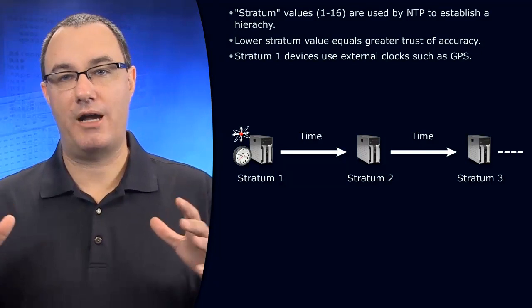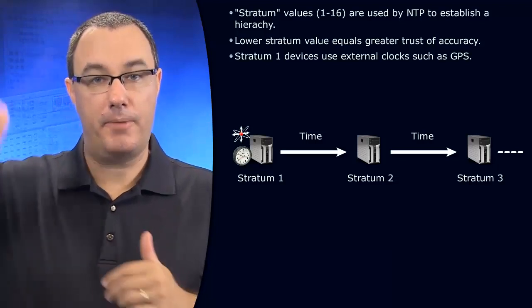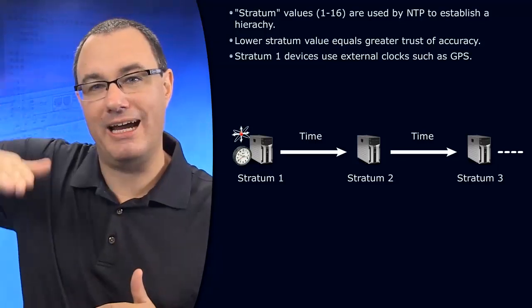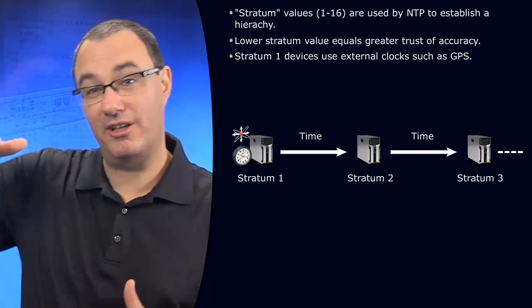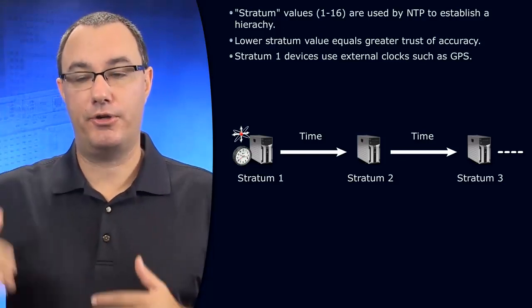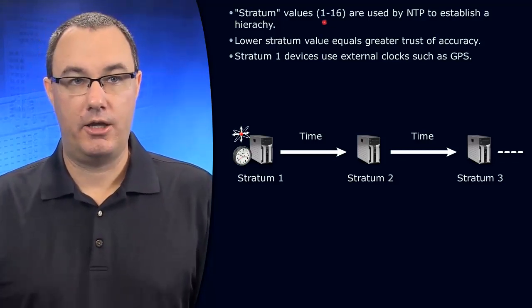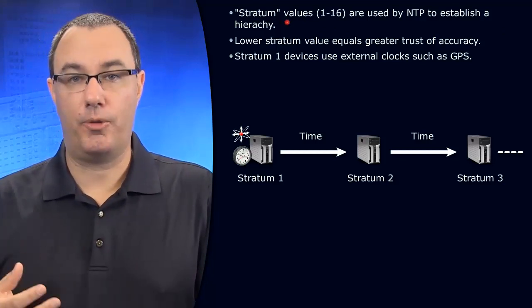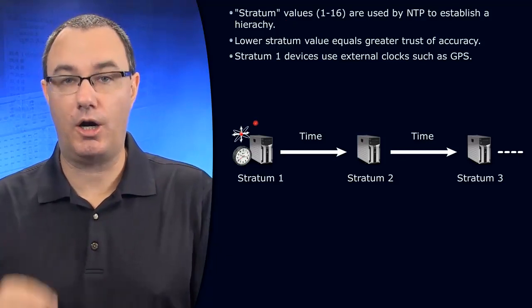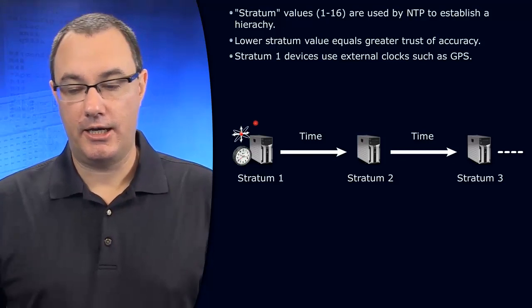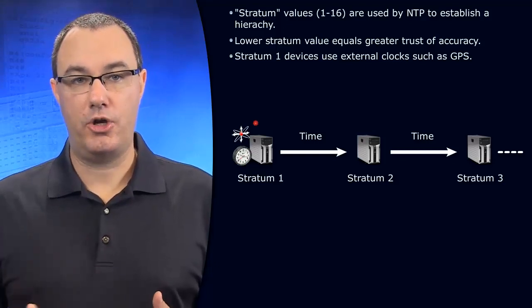Have you ever been driving through an area where there's a cutout of a mountain and you see the different layers of substrate — different mineral deposits, different colors? We call those strata. Well, with NTP we also have layered systems. Stratum — the same term for layers — refers to how many hops away you are from the time source, and it's a way of instilling a level of trustworthiness to a time source.